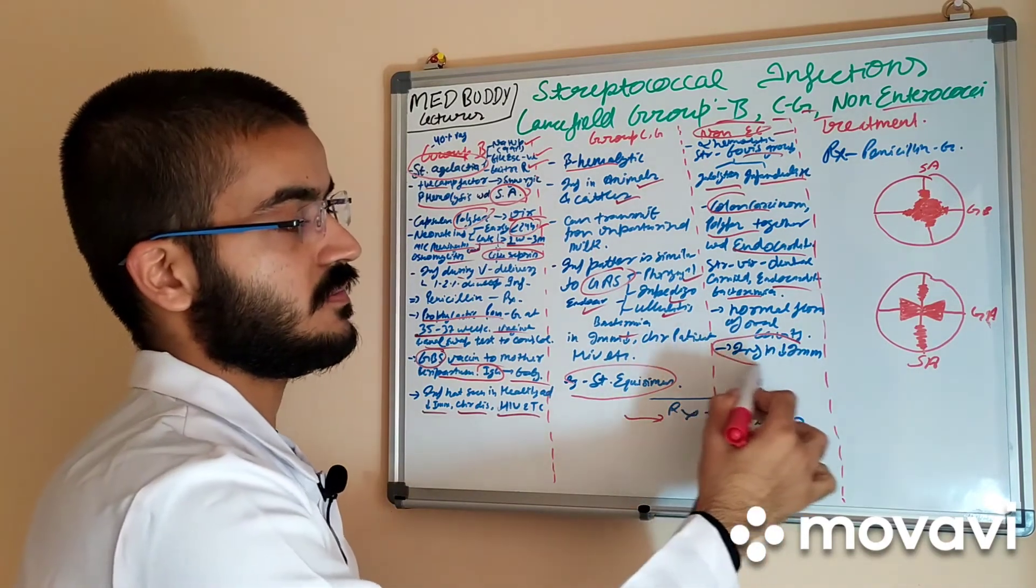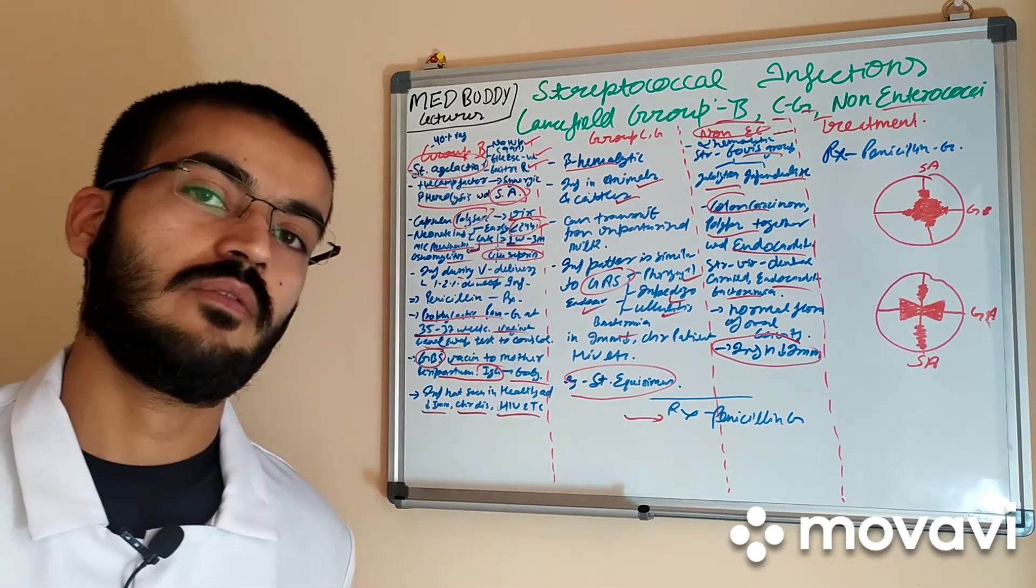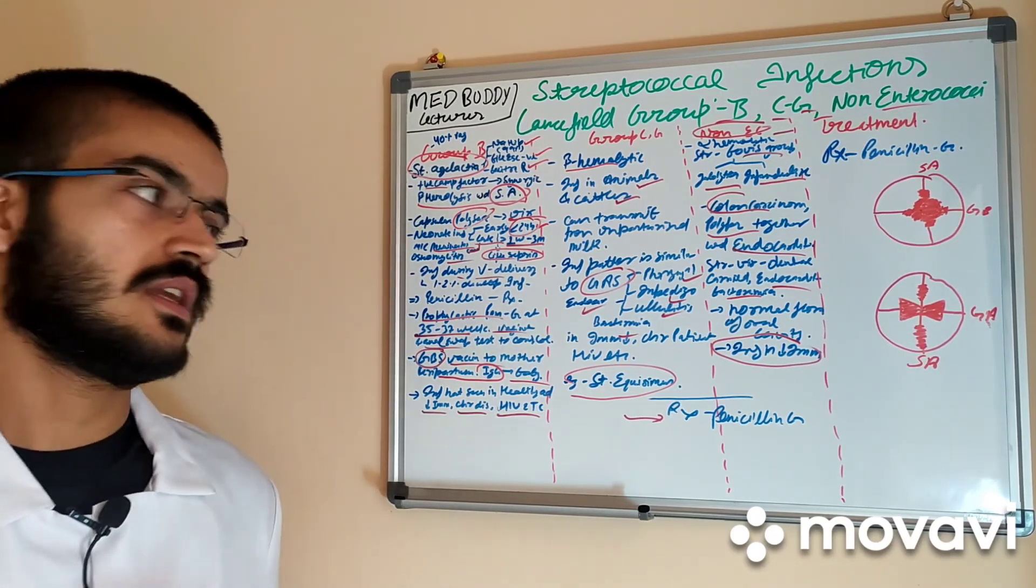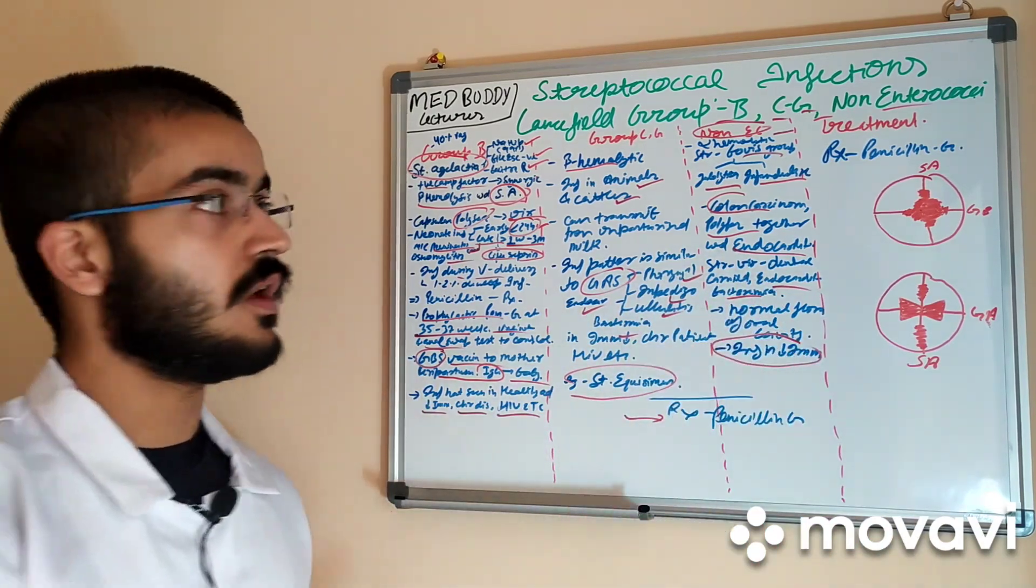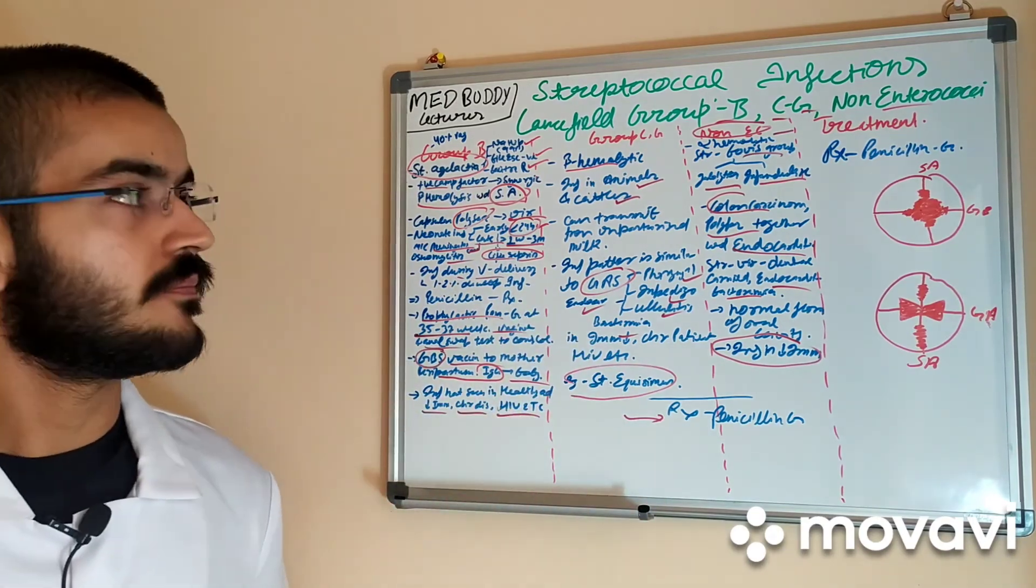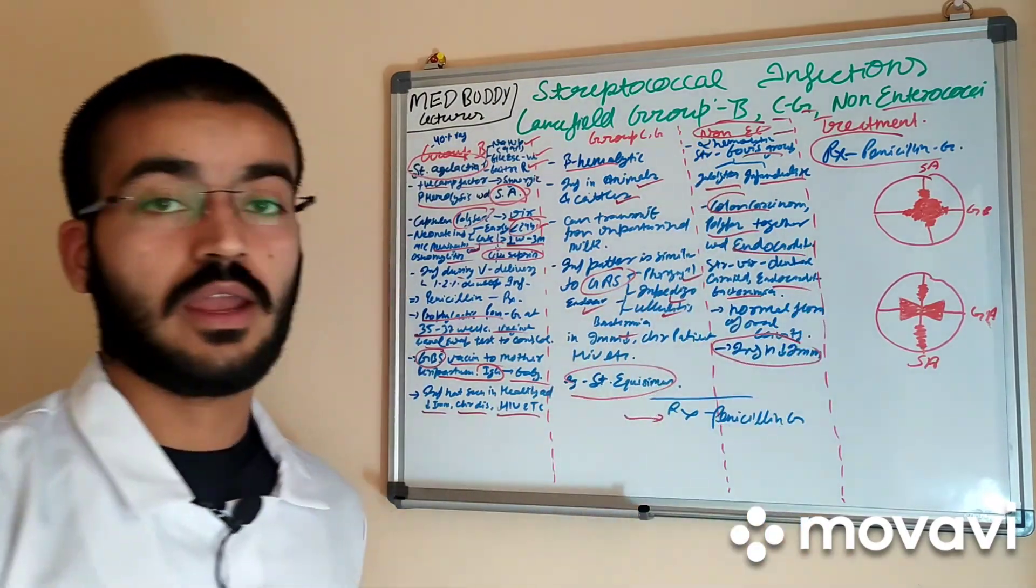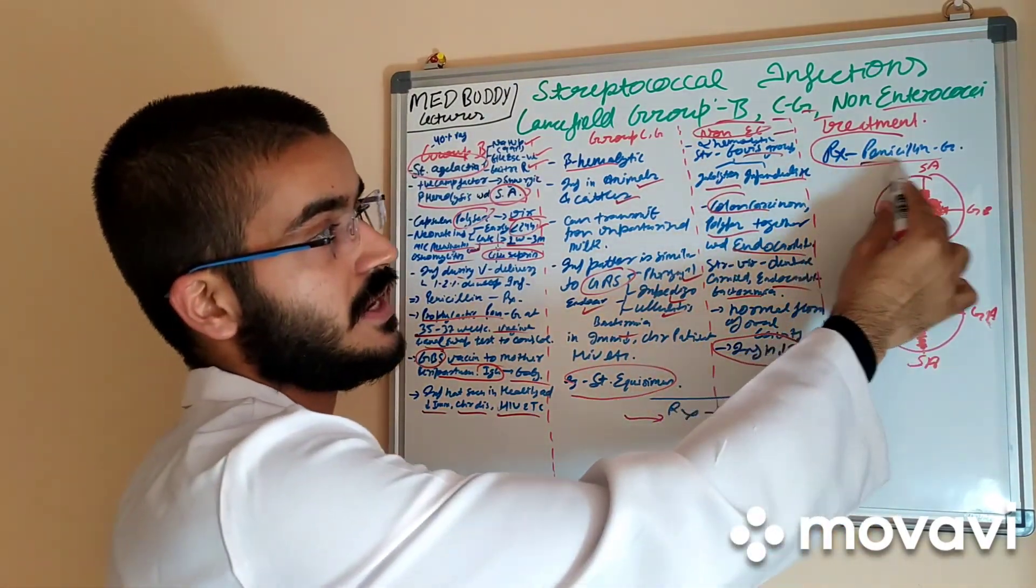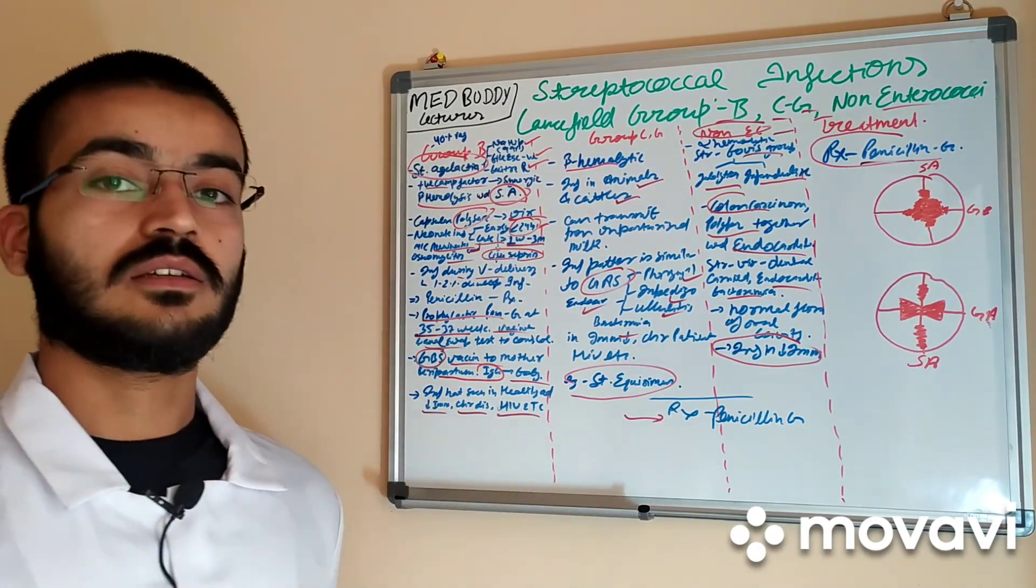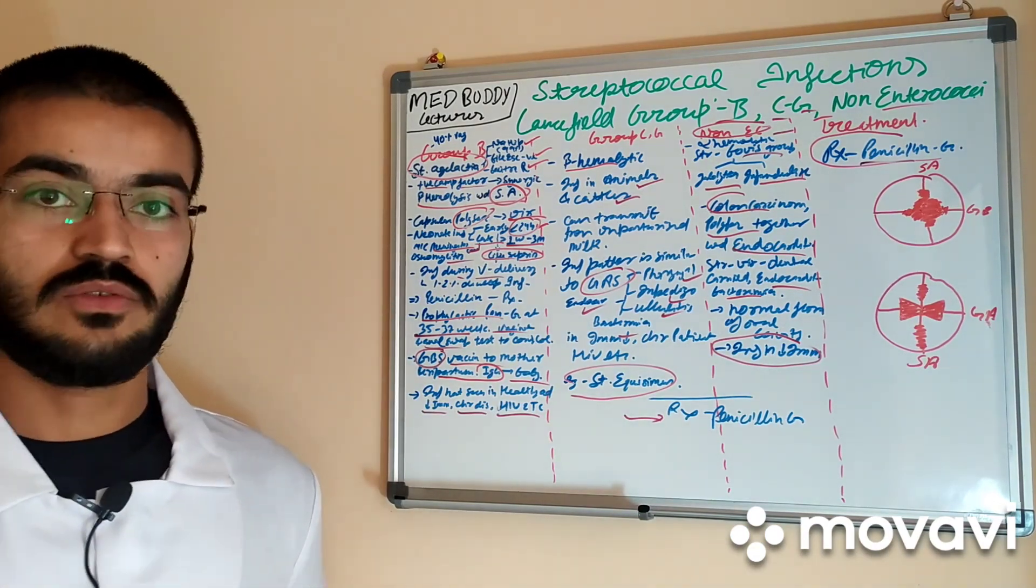In again immunocompromised persons such as HIV patients or patients which are having glucocorticoid therapy or chronic diseases increases the risk of such infections due to oral flora by non-enterococci. Treatment for these group B, group C, G and non-enterococci is again the penicillin G. But in resistant strains other medications such as cephalosporin and gentamicin and macrolides can be used.